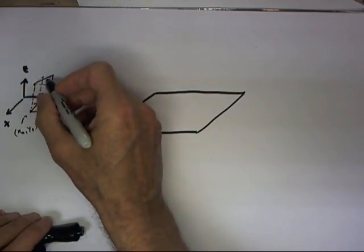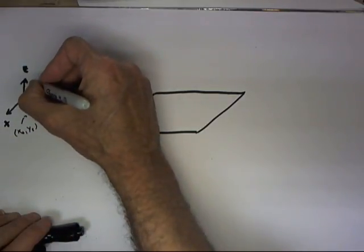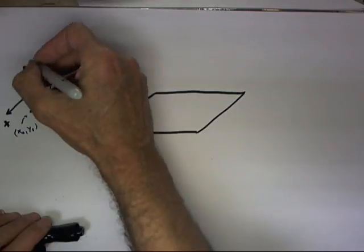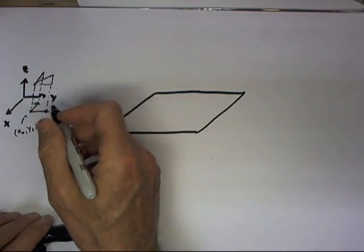We would be at this point if there was no change due to the change in the x direction. Since there is, and since it's a positive change, then the graph is going to look something like this.